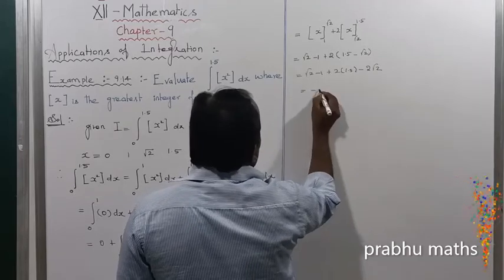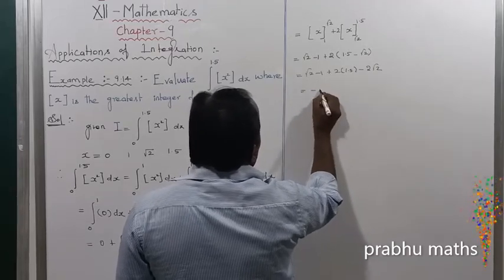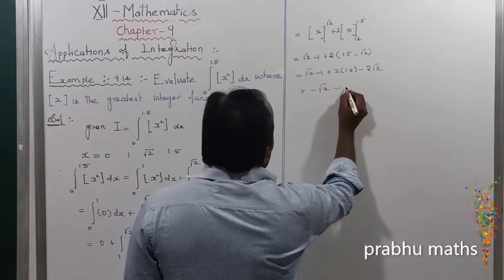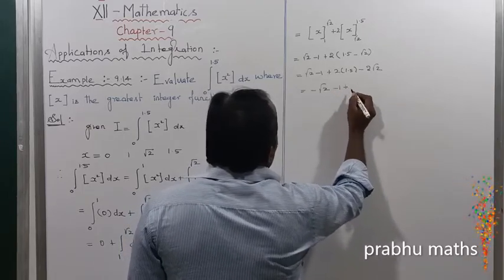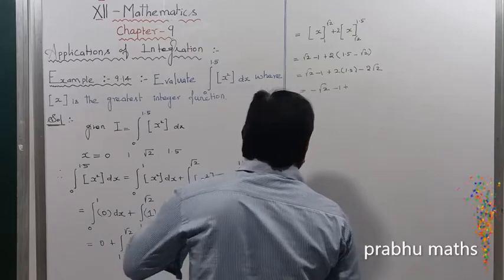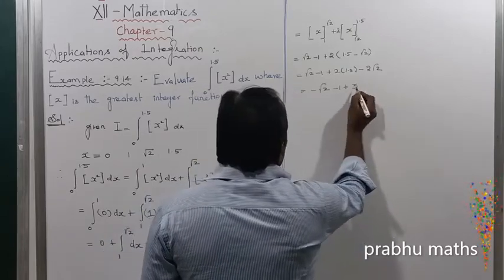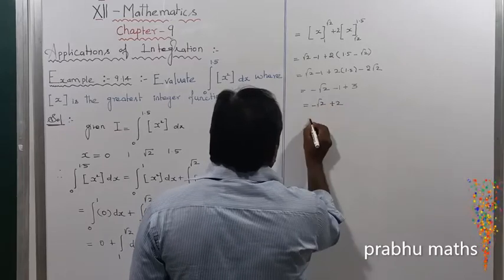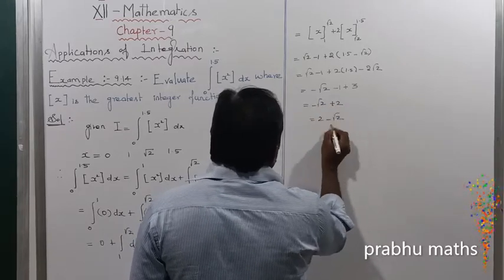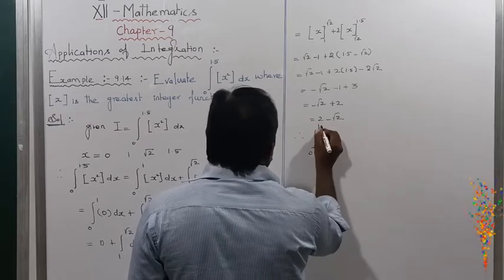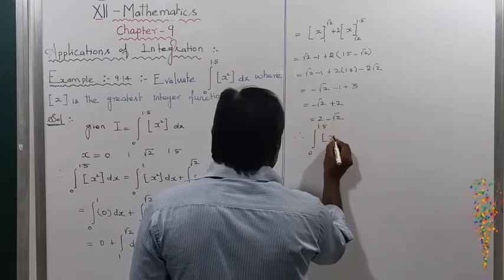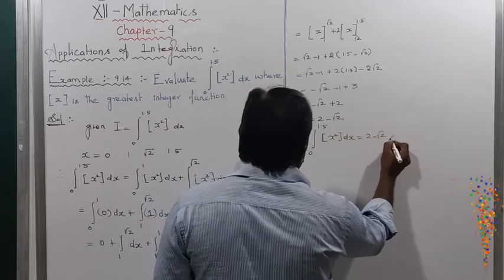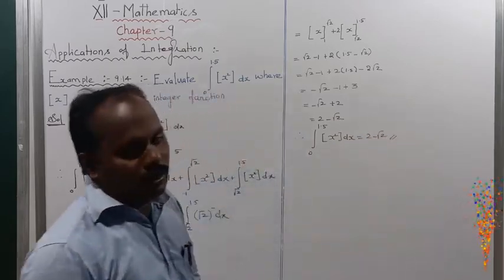That equals root 2 minus 1, plus 3 minus 2 root 2. Simplifying: minus root 2 minus 1 plus 2 equals 2 minus root 2. So the integral from 0 to 1.5 of the greatest integer function of x squared dx equals 2 minus root 2.